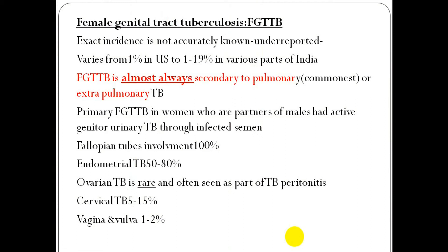Female genital tract tuberculosis has an exact incidence that is not accurately reported, varying from rare cases in the US to very common in various parts of India. Female genital tract TB is always secondary to pulmonary or extra-pulmonary TB. Primary TB may come from a male partner with active genitourinary TB through infected semen. Fallopian tube involvement occurs in about 90% of cases, leading to damage of the cilia and permanent blockage of the tube and infertility.